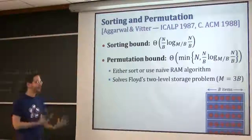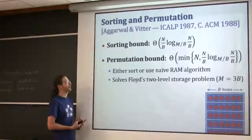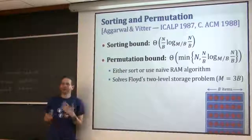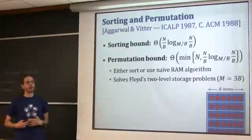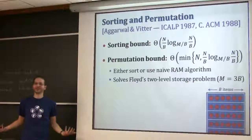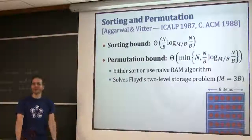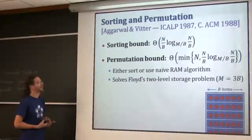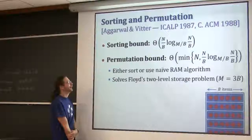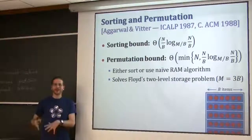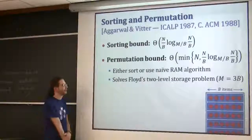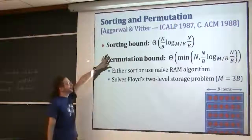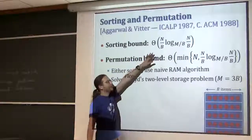If you keep saying 'assume it's sorted', you'd really like some sorted data. How do you sort? The Aggarwal-Vitter paper has a fun quote that today one quarter of all computation is sorting, or some machines are devoted entirely to sorting. It's the problem of the day - everyone was sorting. The right answer for the sorting bound is N over B times log base (M over B) of (N over B). Lots of problems are as hard as sorting and can be solved in sorting bound time.